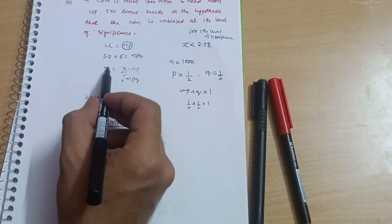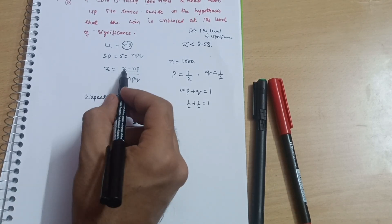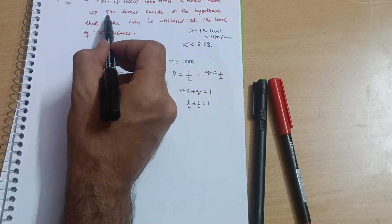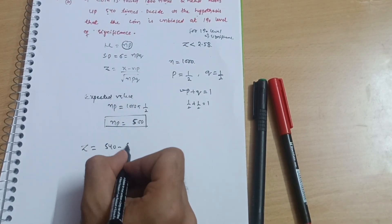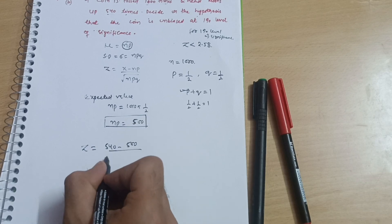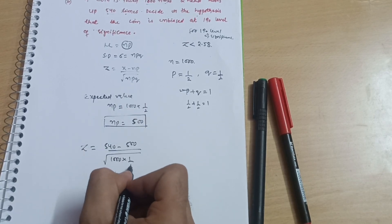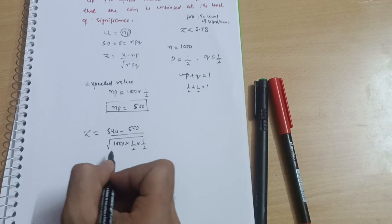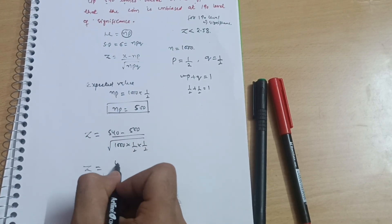Now let me calculate the z value. z equals x, where x is the observed value 540, minus expected value np which is 500, divided by square root of n times p times q. n is 1000, p is 1 by 2, q is also 1 by 2.